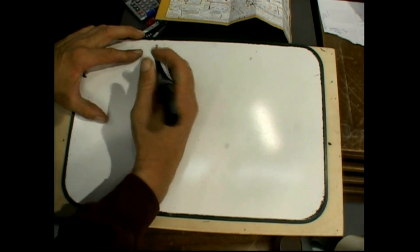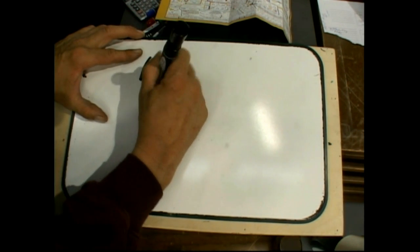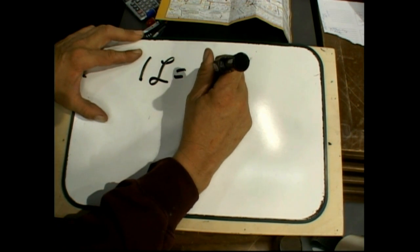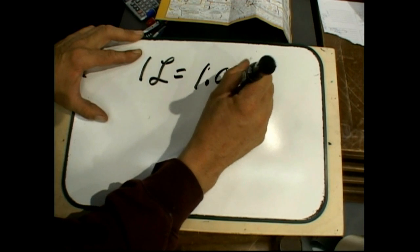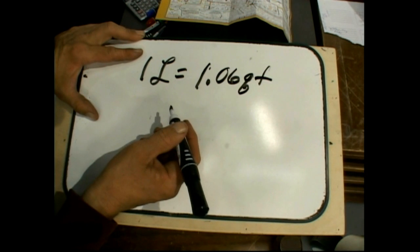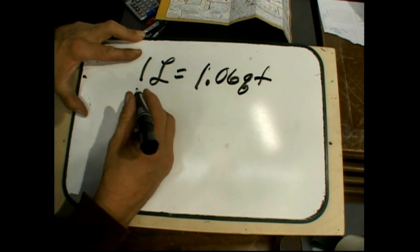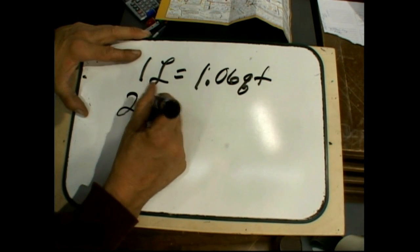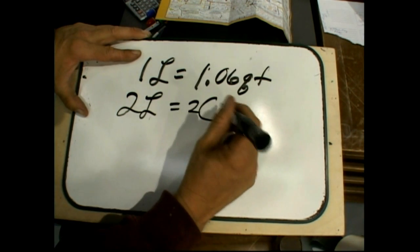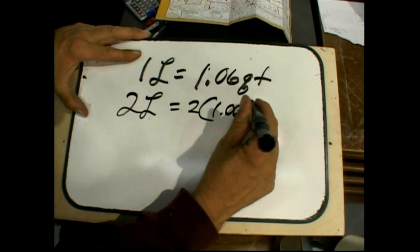Here's one. One liter equals 1.06 quarts. So, say you get a two-liter bottle of soda, right? Two liters is going to equal two times 1.06 quarts.